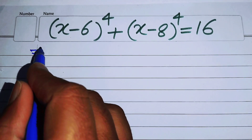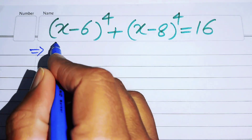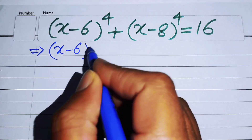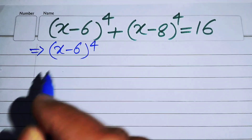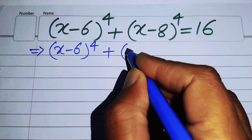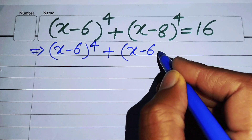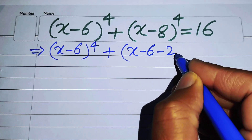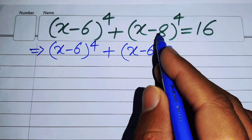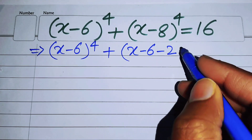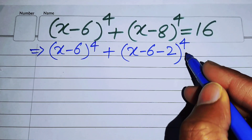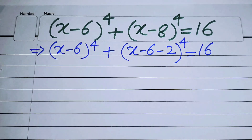The very first thing we do is rewrite this equation as (x - 6)^4 plus (x - 6 - 2)^4 = 16, because we break the -8 as -6 - 2.